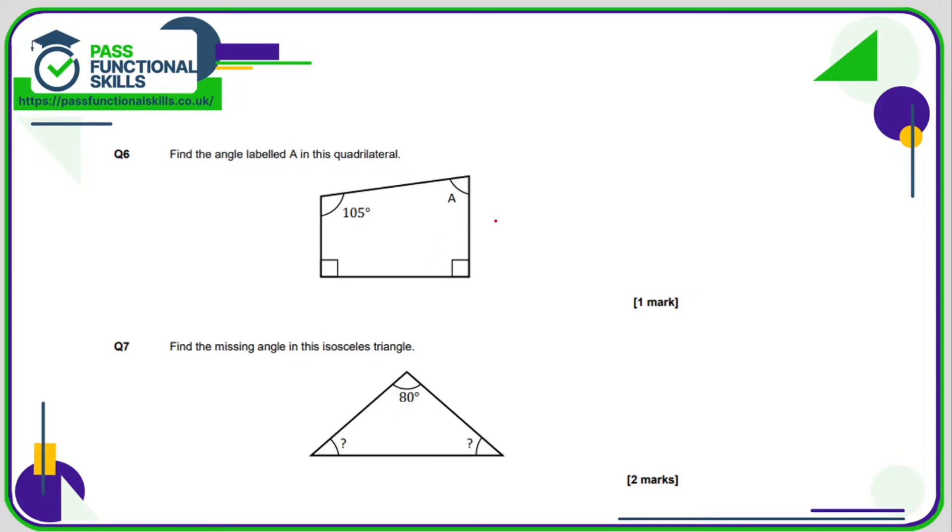Question six - you can use a calculator for the remaining questions. So far we've got 90 plus 90 plus 105. These four angles add up to 360. So 360 minus 105 minus 90 minus 90 gives us angle A, which is 75 degrees.